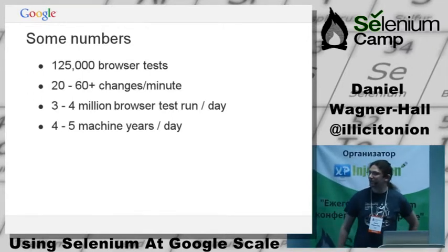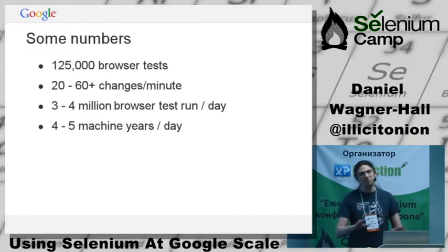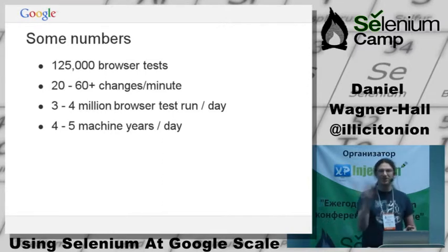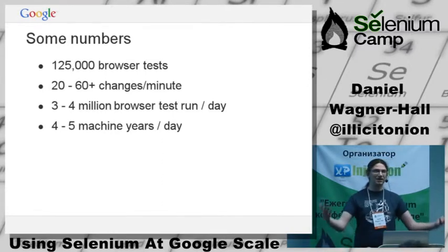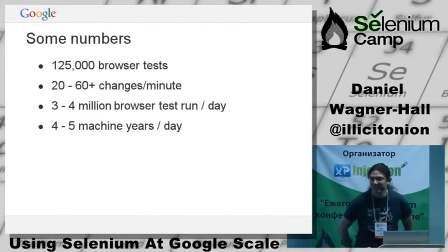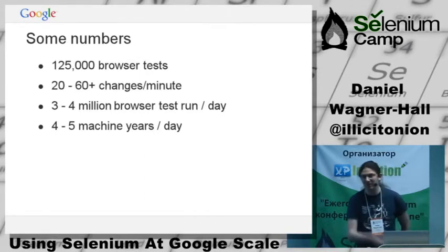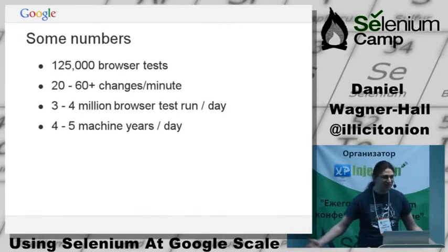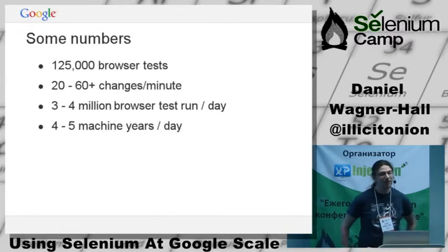We face a bunch of problems like slowness and flakiness. If you think you have problems with flakiness when one in a hundred tests fail, one in a hundred for us means 40,000 failing tests — that's 40,000 emails every day saying Selenium didn't quite start properly. We can't deal with one in a hundred or one in a thousand. We can deal with about one in a million. With Selenium that's pretty hard, but we've worked out a lot of strategies to make that pretty much a reality.